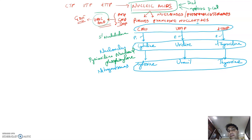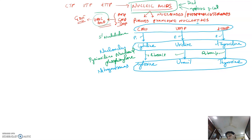In the first step they are converted to nucleosides by 5' nucleotidase, and in the second step by a phosphorylase, ribose-1-phosphate is removed, and they form cytosine, uracil, and thymine.